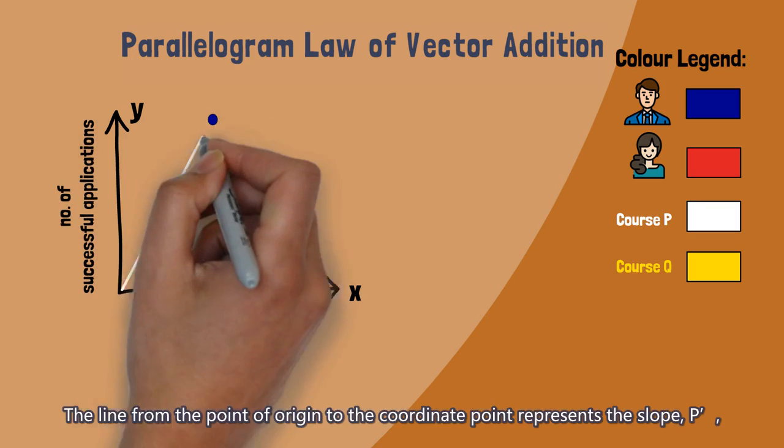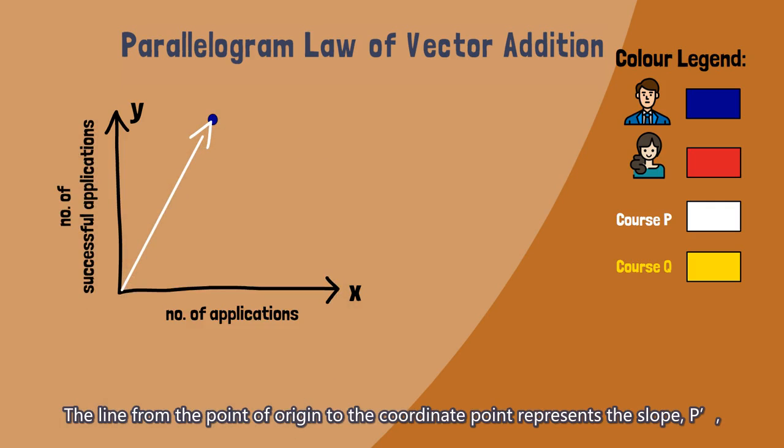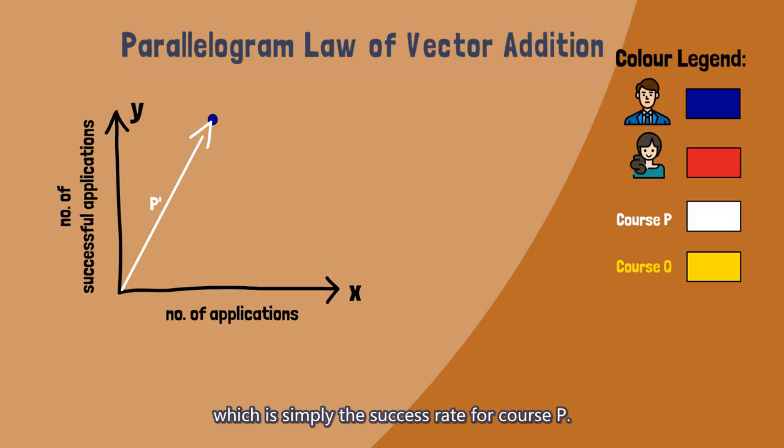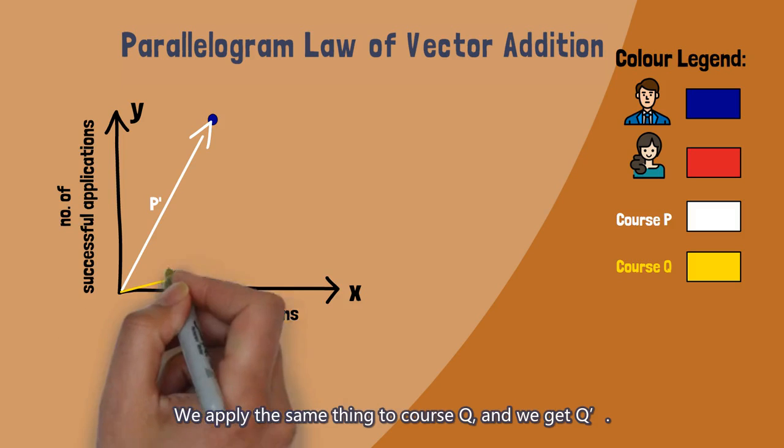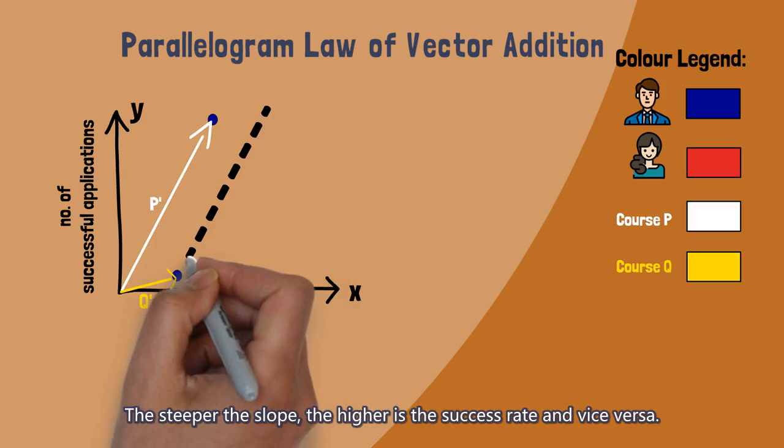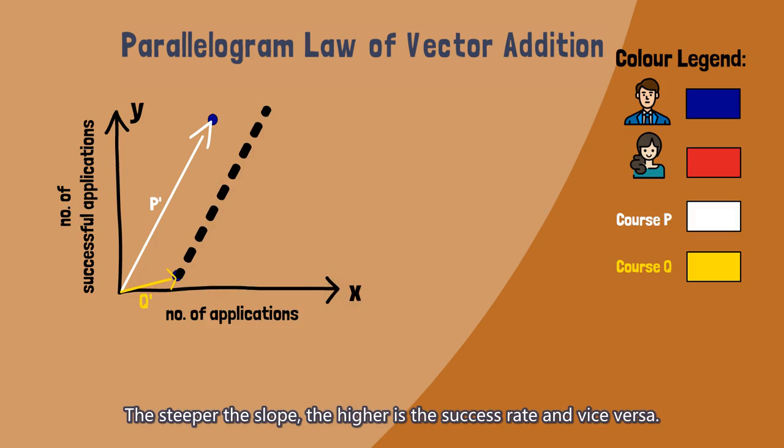For Course P, we have a coordinate point. The line from the point of origin to the coordinate point represents the slope P', which is simply the success rate for Course P. We apply the same thing to Course Q, and we get Q'. The steeper the slope, the higher is the success rate, and vice versa.